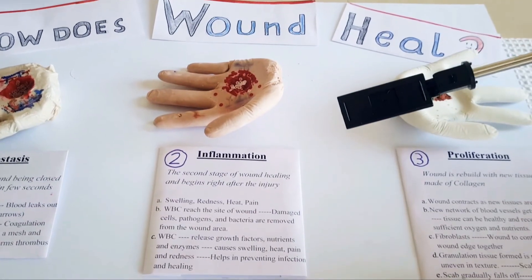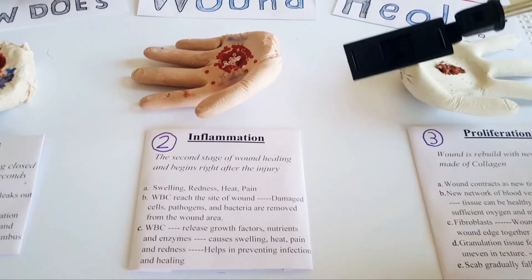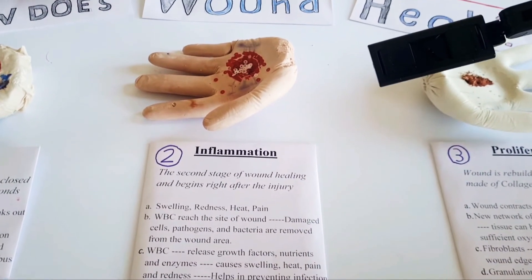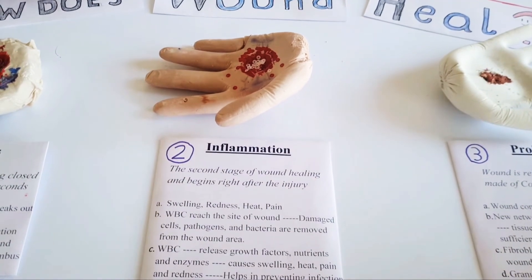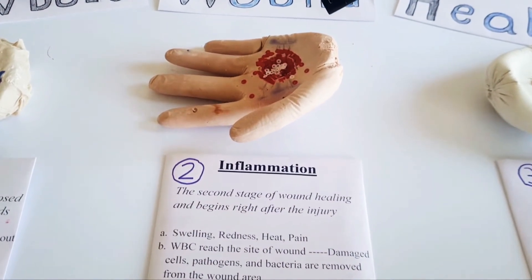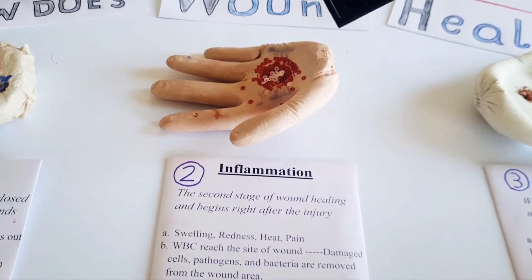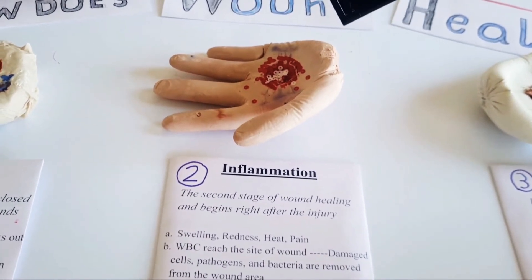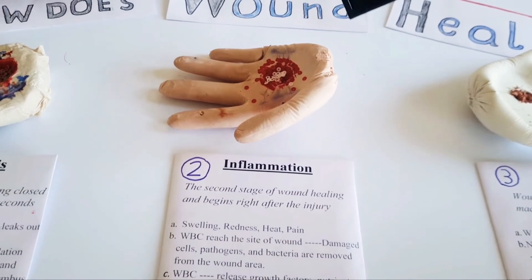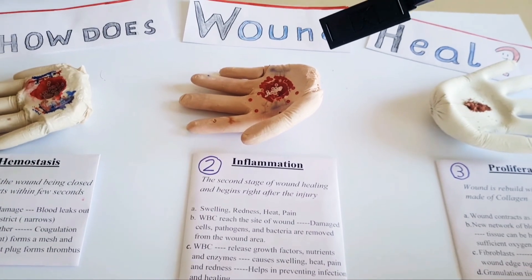The second step of wound healing is inflammation. It includes four things: swelling, redness, heat, and pain. As shown here, WBCs represented by the white specks reach the area and remove pathogens. The red specks represent the swelling, heat, and redness, and it is different from other stages to give a better mental image of inflammation.